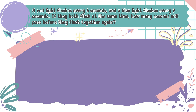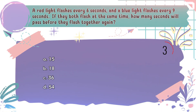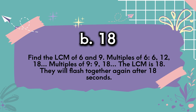Question number 20: A red light flashes every 6 seconds and a blue light flashes every 9 seconds. If they both flash at the same time, how many seconds will pass before they flash together again? The choices are A: 15, B: 18, C: 36, D: 54. The correct answer is B, 18. Find the LCM of 6 and 9. Multiples of 6 are 6, 12, 18, and so on. Multiples of 9 are 9, 18, and so on. The LCM is 18 — they will flash together again after 18 seconds.